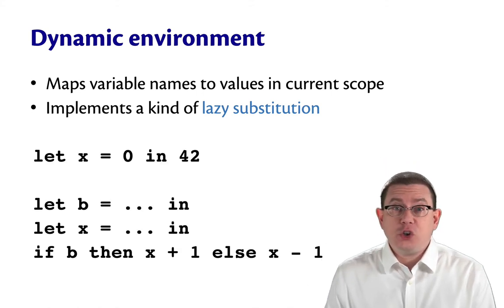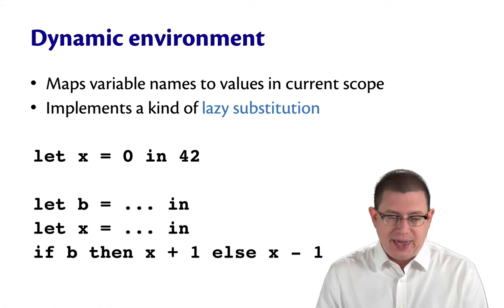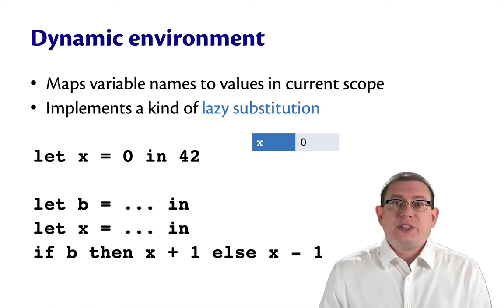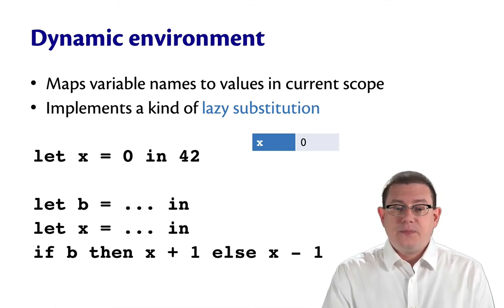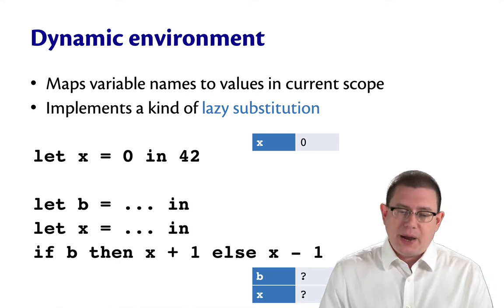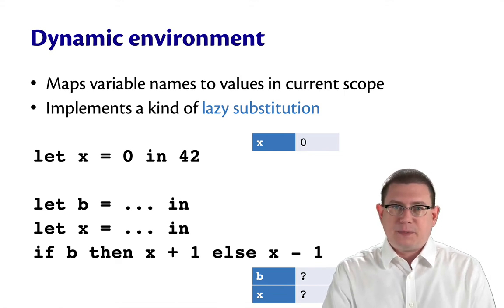So maybe you have a very large piece of code that binds x and then binds b and then binds x again and eventually uses them both. Well, that's going to create a dynamic environment, a memory, that binds x to zero. And later on, eventually there will be a dynamic environment that's binding b to some value and x potentially to some different value since it's been rebound.